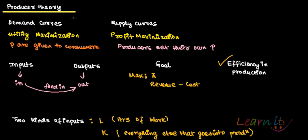Introduction to producer theory. As far as demand curves are concerned, they come from utility maximization — utility maximization gives rise to demand curves. Given an indifference curve and a budget line, you can draw a demand curve. Supply curves, on the other hand, come from the profit maximization approach of producers. Together, demand curves and supply curves make our model complete.